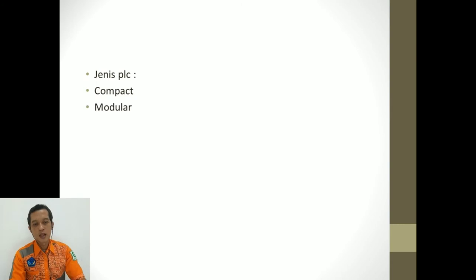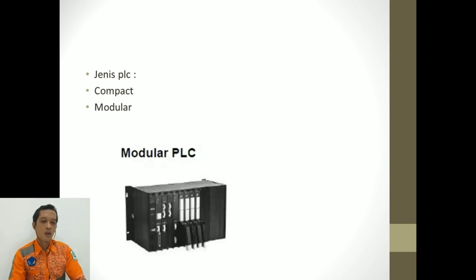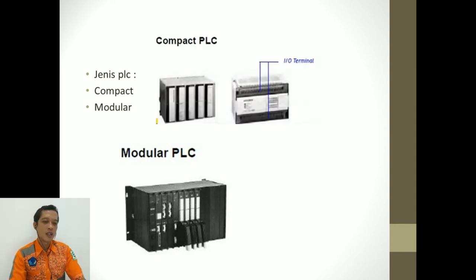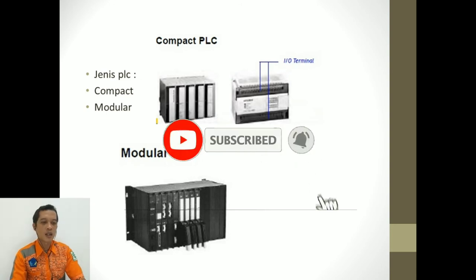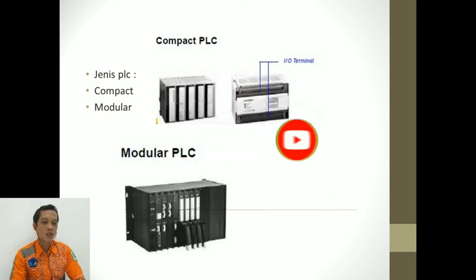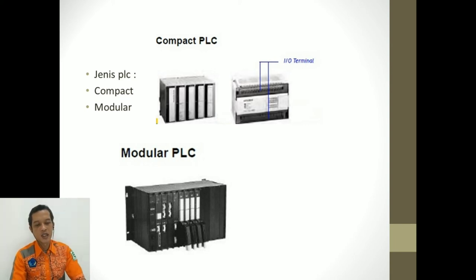Jenis PLC ada dua, yaitu modular dan compact. Perbedaan yang mendasar antara compact PLC dan modular PLC: untuk tipe compact, dia bisa langsung dihubungkan ke sumber arus bolak-balik dan PLC ini menghasilkan tegangan DC yang digunakan untuk kawasan input. Tetapi untuk tipe modular, sumber PLC-nya atau adapternya berada terpisah dengan unit PLC itu sendiri. Itu perbedaan yang mencolok antara PLC compact dan PLC modular, dan perbedaan yang lain akan kita bahas lebih lanjut.